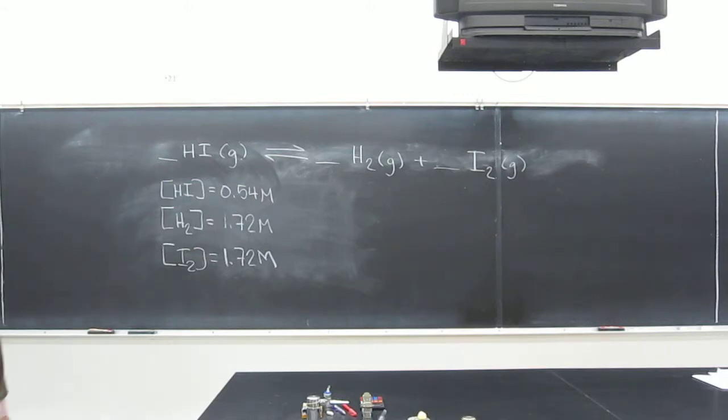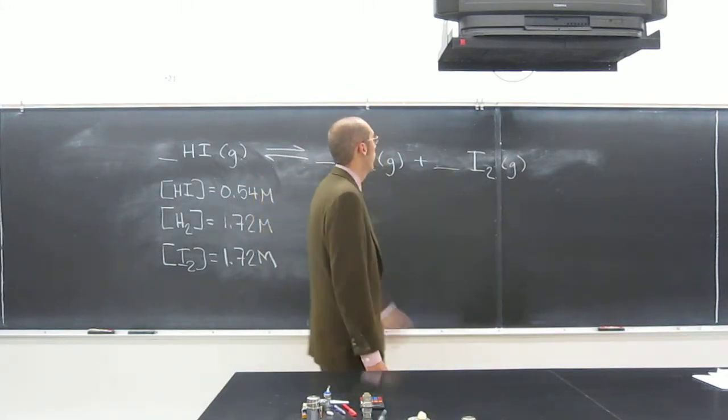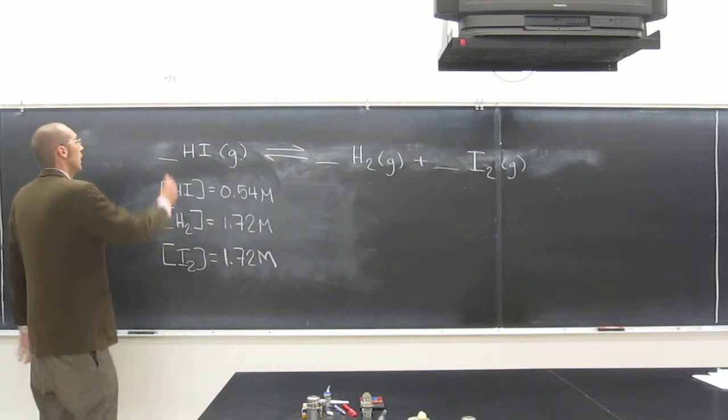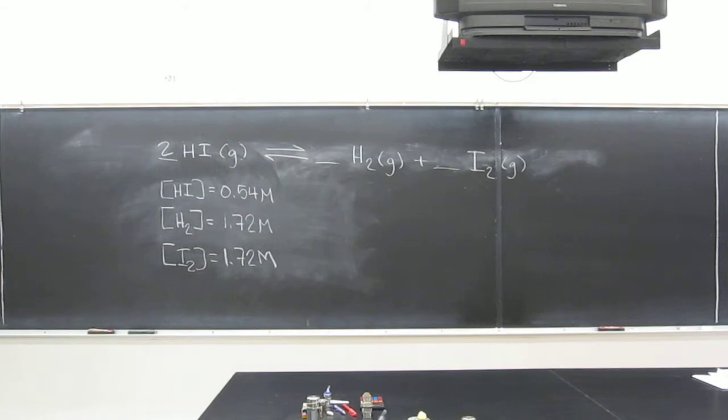So we look here, pretty straightforward. We got two hydrogens here, two iodines here, and only one of each here. So just put a two there, and it should be balanced. Does everybody agree?